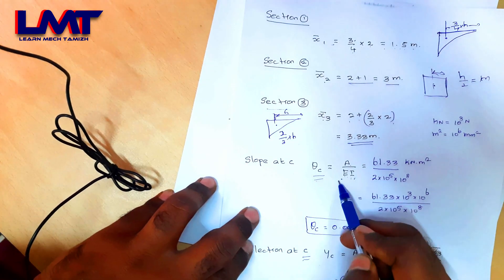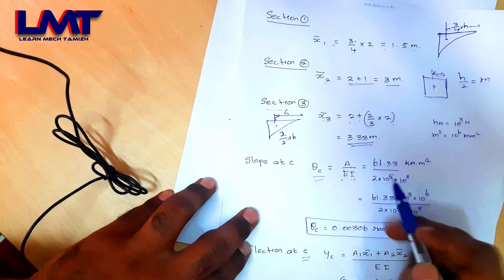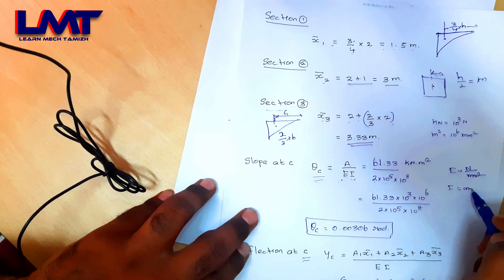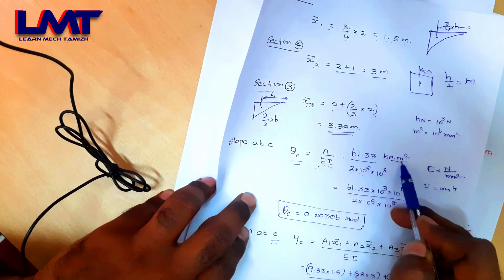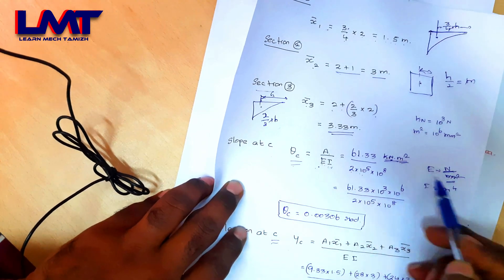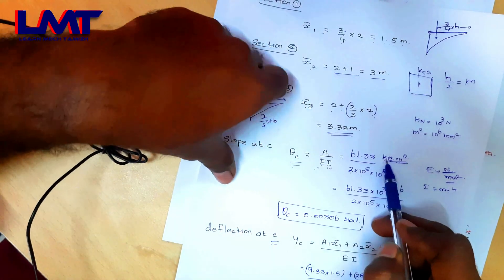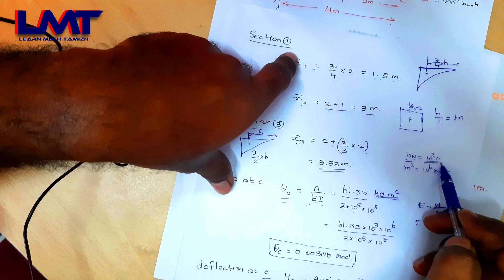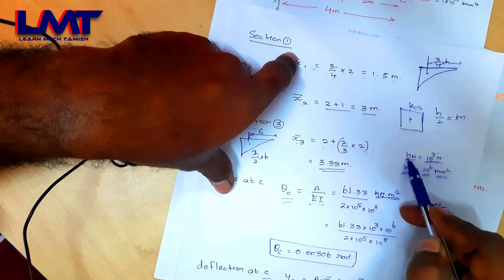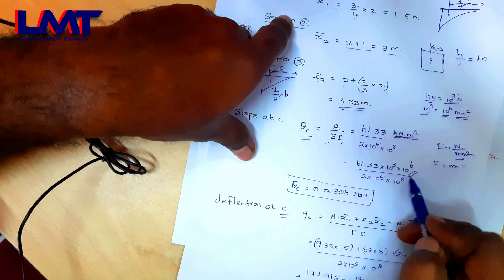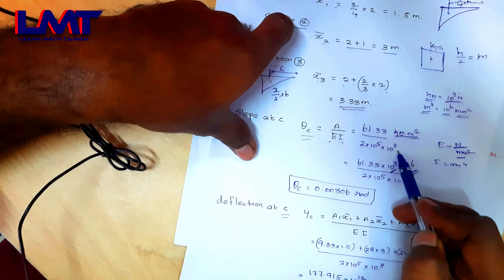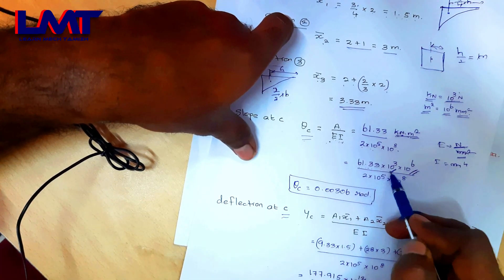For EI: E = 2×10⁵ N/mm², I = 1×10⁸ mm⁴. For unit conversion: 1 kN = 10³ N, and 1 m² = 10⁶ mm², so 1 kNm² = 10³ × 10⁶ = 10⁹ Nmm². We apply these conversions to get consistent units when dividing the moment area by EI.